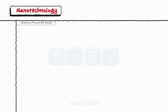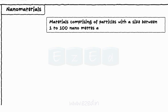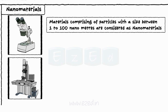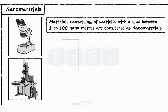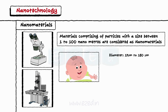Let's study nanomaterials now. Materials comprising of particles with a size between 1 to 100 nanometers are considered as nanomaterials. These objects are very small and cannot be seen without a powerful electron microscope. The diameter of a human hair varies between 17 micrometers to 180 micrometers, so one can imagine how small a nanomaterial would be.